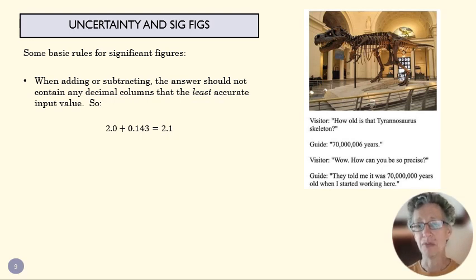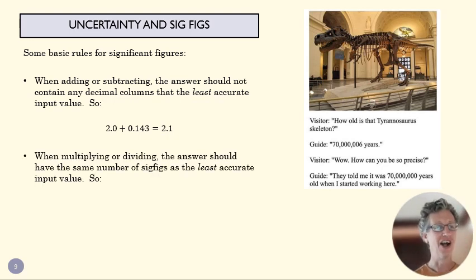When this 70 times 10 to the 6 suggests it might be 65 million, it might be 75 million. And so when we add 6, it doesn't really change that number at all, which is why this is a funny, funny joke. Funny in the science world.